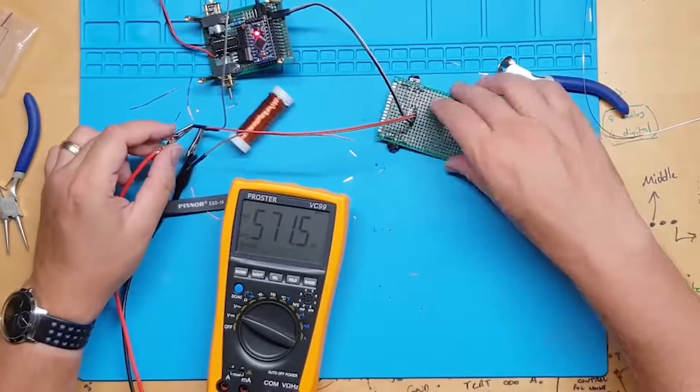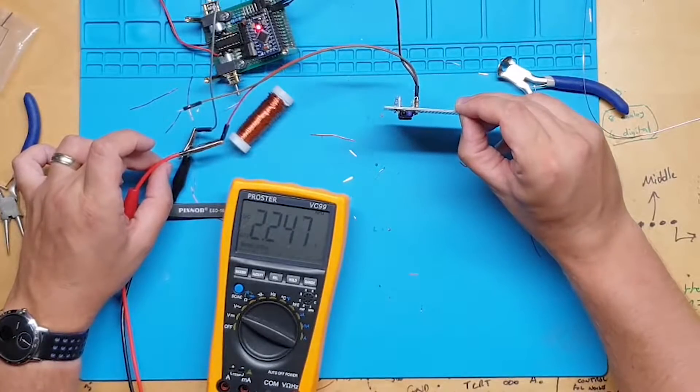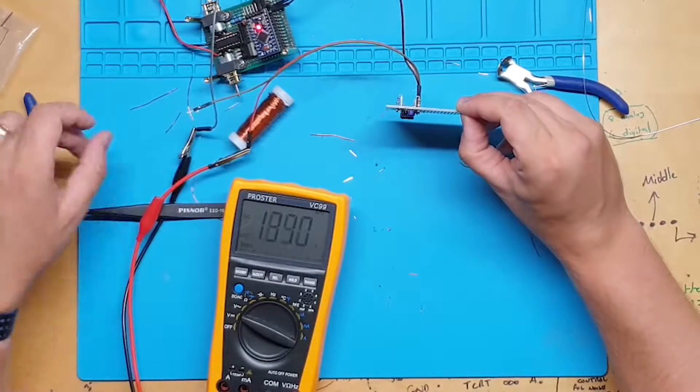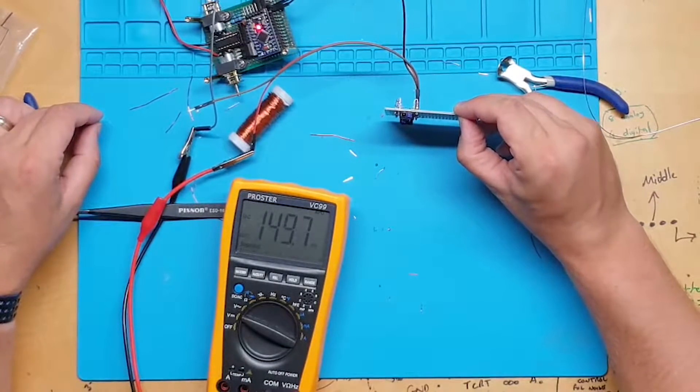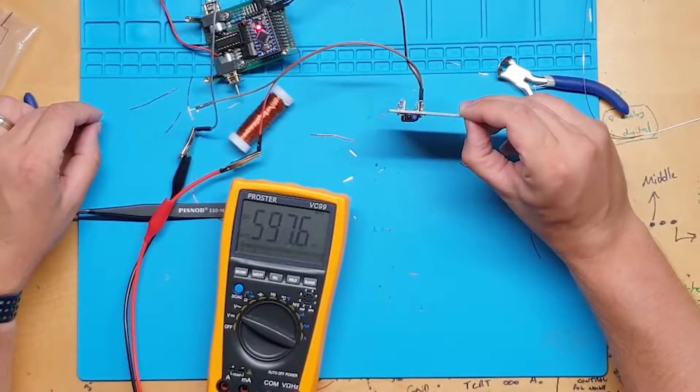When the sensor is moved closer to an object the voltage on the meter will drop. When the sensor is moved further away from an object the voltage will increase. Minimum voltage indicates that we are getting a lot of infrared reflected which means that an object is close.